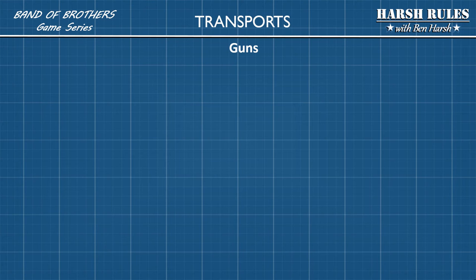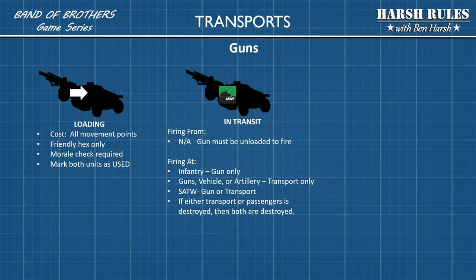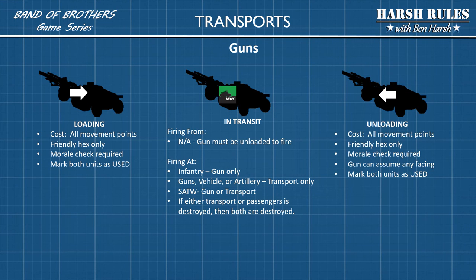Now let's look at guns in half-tracks. When loading a gun, it costs all of the half-track's movement points. You can do so only in a friendly hex, and a morale check is required for the gun crew. Once done, you mark both units as used. While in transit, you may not use the gun — it must be unloaded to be properly used. If the enemy is firing at the gun in transport and they're infantry, they can only target the gun. If they're a gun, vehicle, or artillery, they must target the transport. An SATW gets a choice of either the gun or the transport. If the transport or the gun is destroyed, both units are destroyed. Unloading a gun costs all the half-track's movement points and can only be done in a friendly hex; a morale check is required. The gun can assume any facing, and you must mark both units as used.